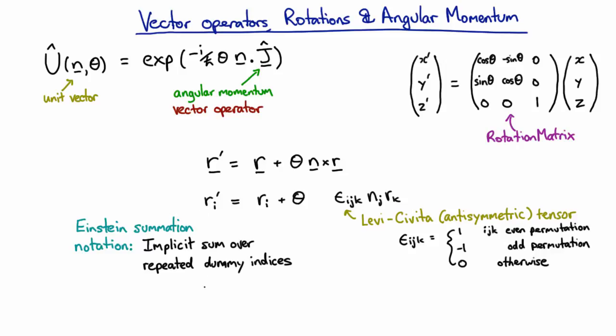We can use Einstein summation notation to write the new coordinates in terms of the old coordinates. It's just a matrix multiplication. The new coordinates equal a matrix multiplied by the old coordinates. This matrix is a function of the angle and the vector. We can see what that is from here: we have a delta function for the diagonal part, and this bit here is more complicated with an implicit sum over j and k.